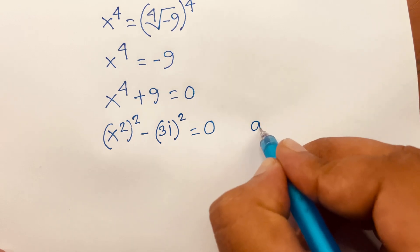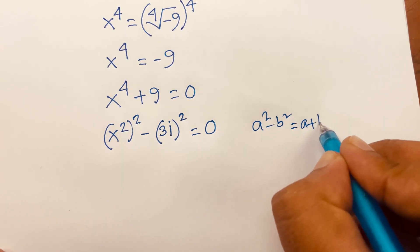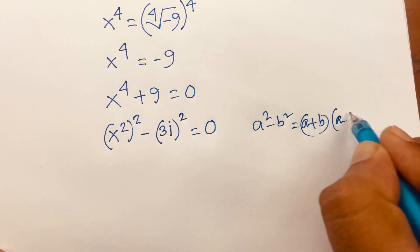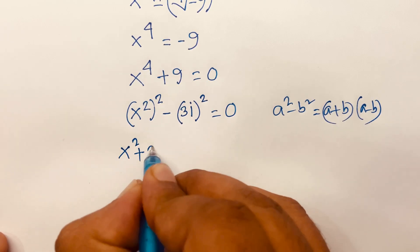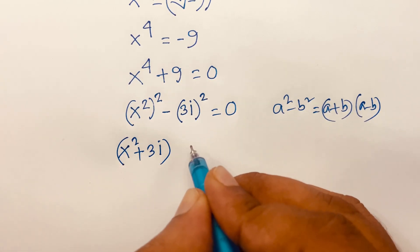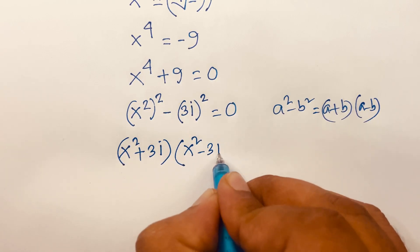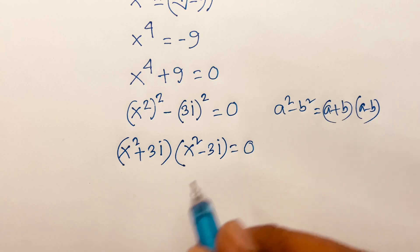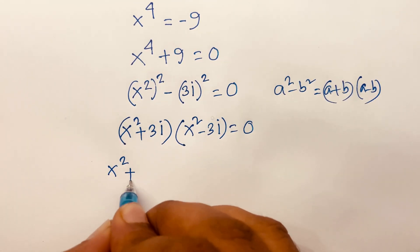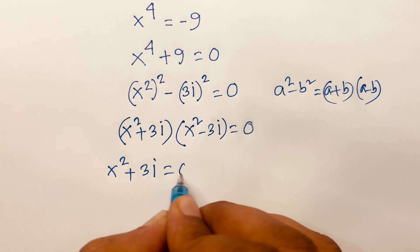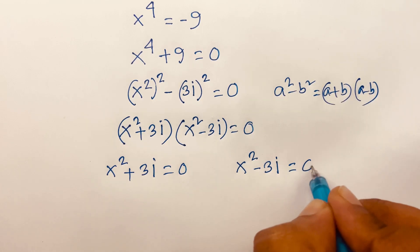We know that a squared minus b squared equals a plus b times a minus b. According to this rule, I can say x squared plus 3i times x squared minus 3i is equal to 0. There are two cases: our first case is x squared plus 3i is equal to 0, and the other case is x squared minus 3i is equal to 0.